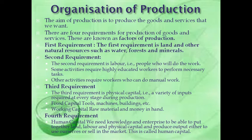To summarize the requirements for the organization of production: we need land and natural resources such as water, forest and minerals. Apart from this, we need labour — people to work. Then we need capital, that is finance, machinery, buildings, and we also need human capital — people physically working.